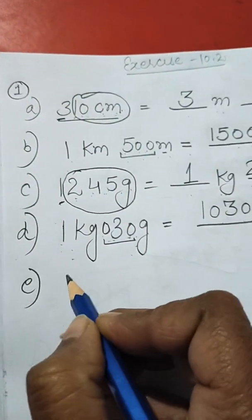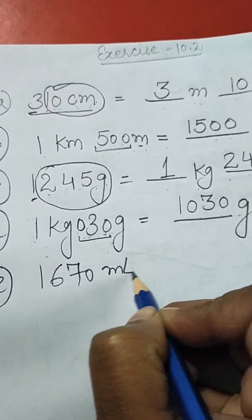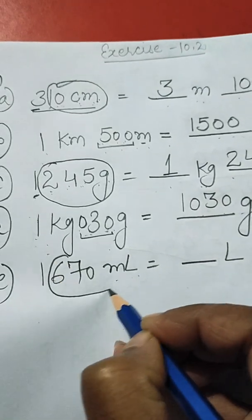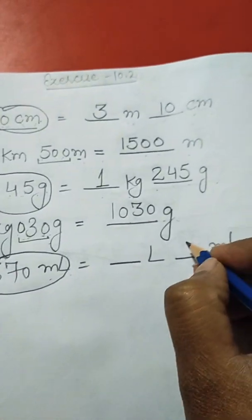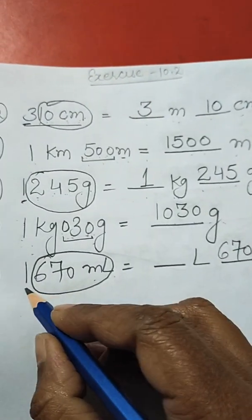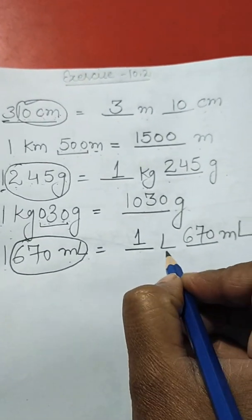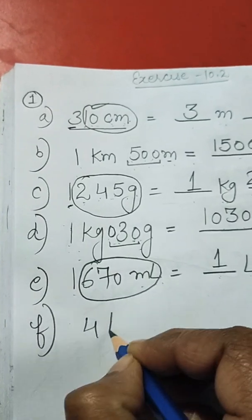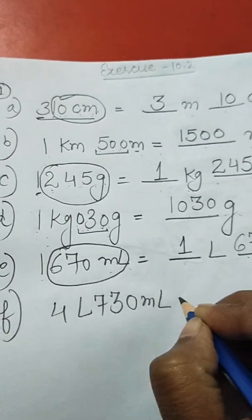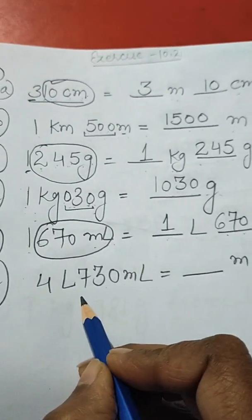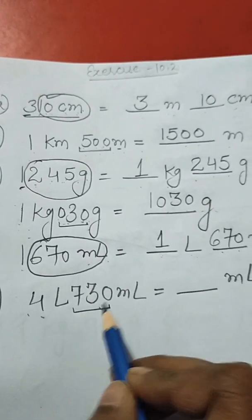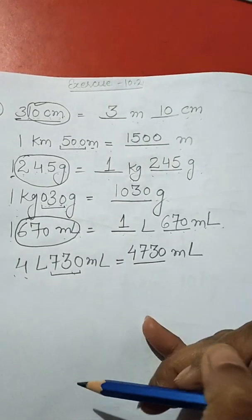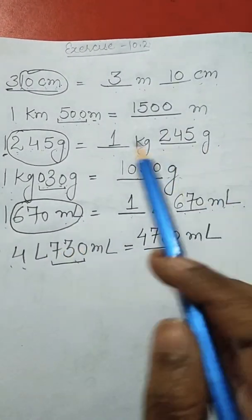Part E: 1670 milliliters is equal to dash liter dash milliliter. With milliliter we take three digits, so 670 milliliters and 1 liter — answer is 1 liter 670 milliliters. Part F: 4 liters 730 milliliters is equal to dash milliliters. Three digits are already there, so the answer is 4730 milliliters.